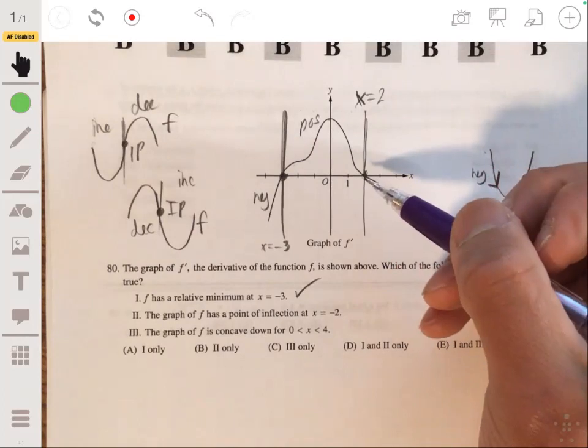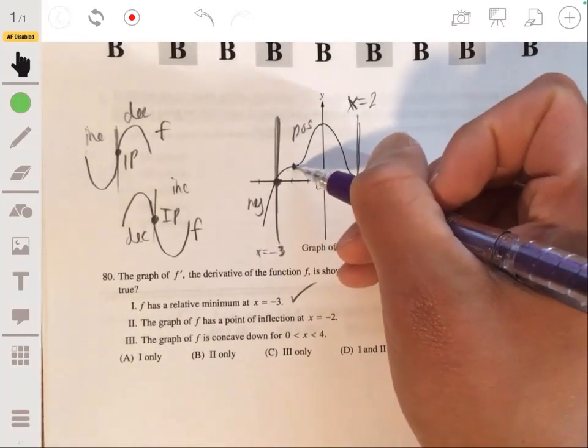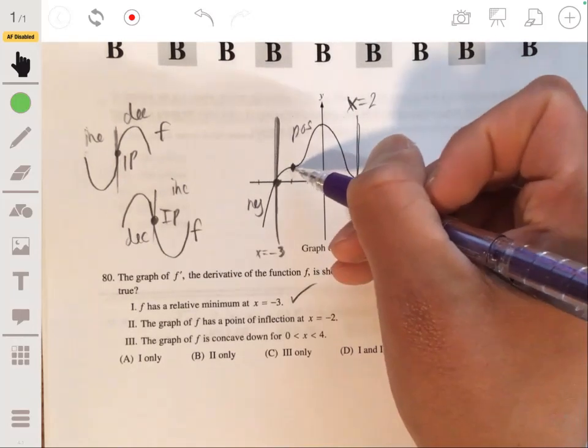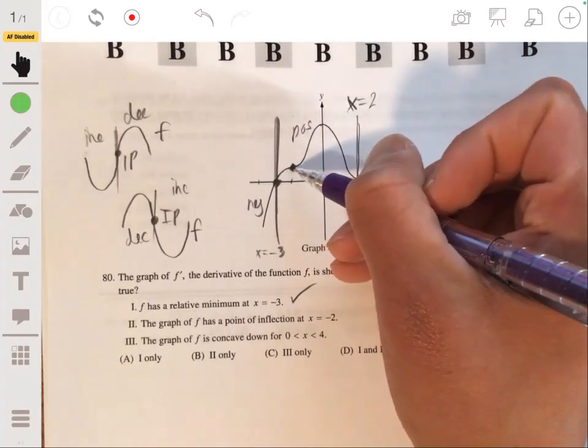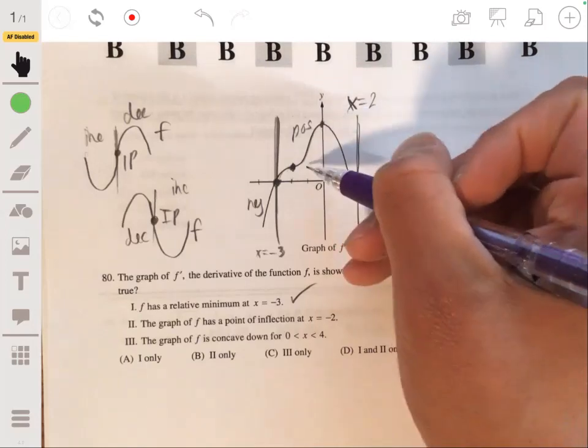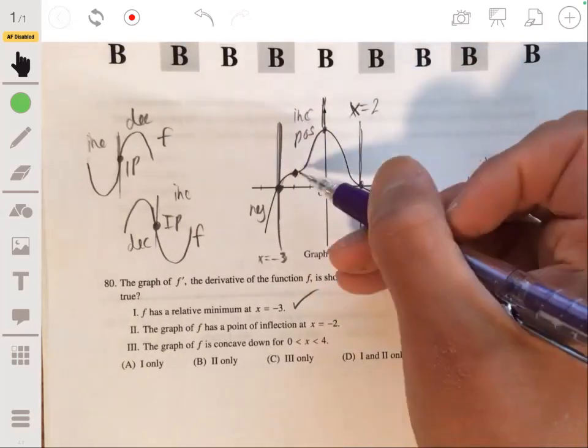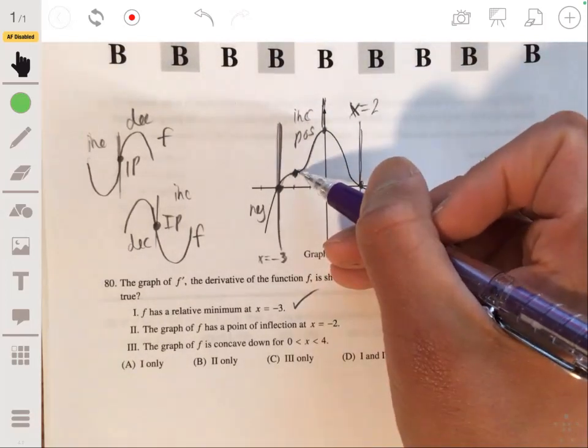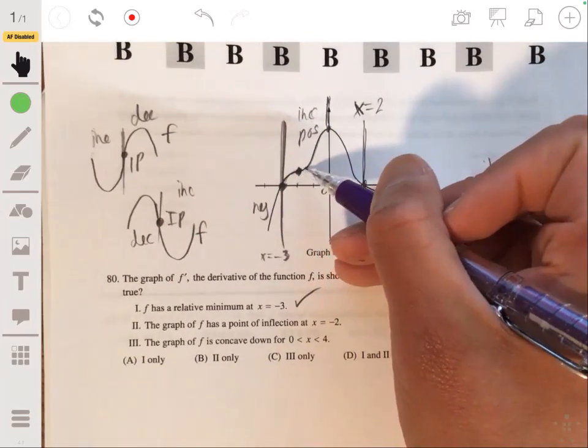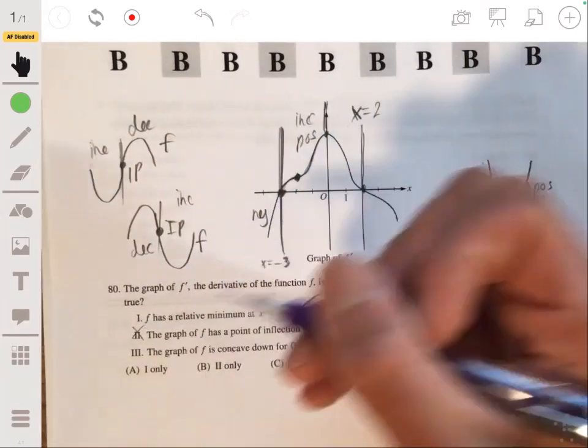So let's see if it changes its behavior at negative 2. At negative 2, we're about over here. And you can see that the graph of f prime is increasing all up to here, increasing all the way up to 0. So there's not going to be an inflection point at negative 2, because it's still increasing afterwards. It doesn't change its behavior. So statement two won't be correct.